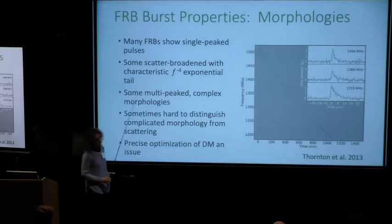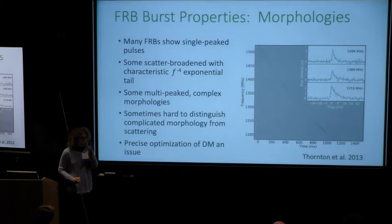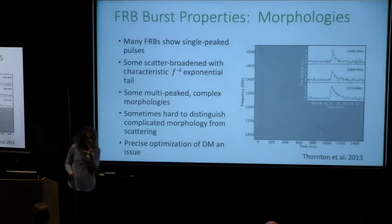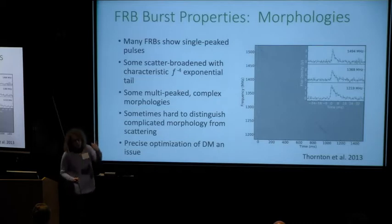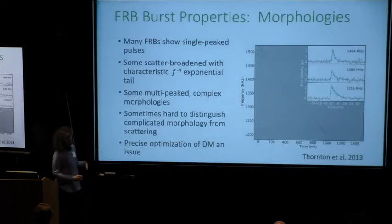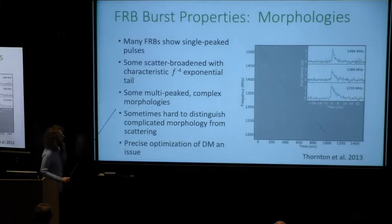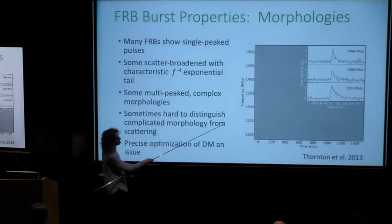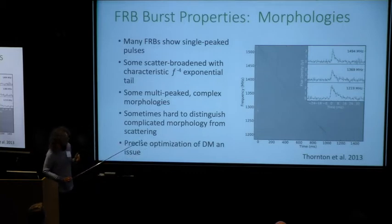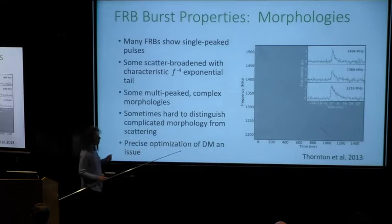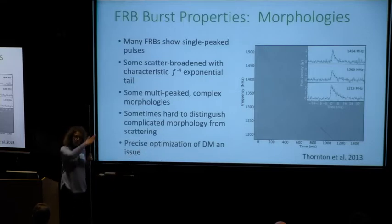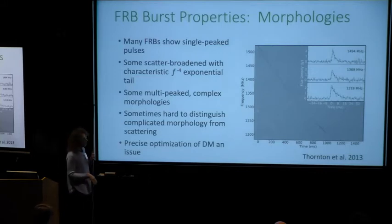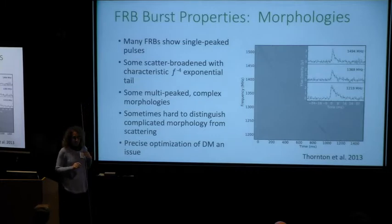Some bursts, like those in 121102, are multi-peaked with complex morphologies. It is sometimes hard to distinguish complicated morphology from scattering, particularly if you don't have wide bandwidth or if the source is itself band-limited. This is something we're struggling with a bit in CHIME FRBs. How do you distinguish complex morphology from scattering? And when you have complex morphology, it's not obvious — this actually makes you wonder how best to define dispersion measure.